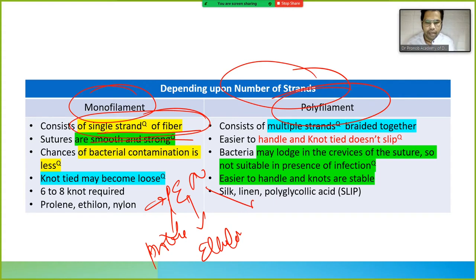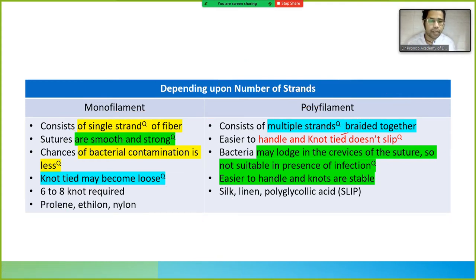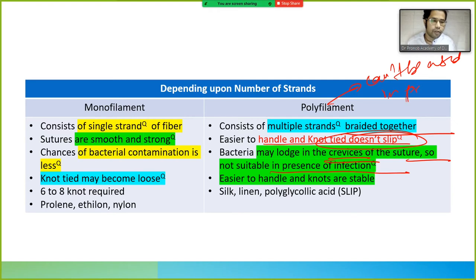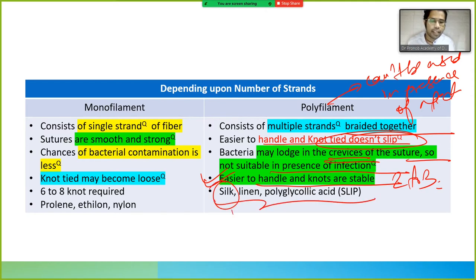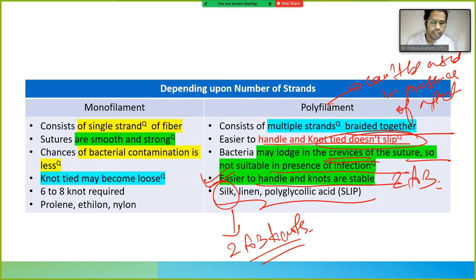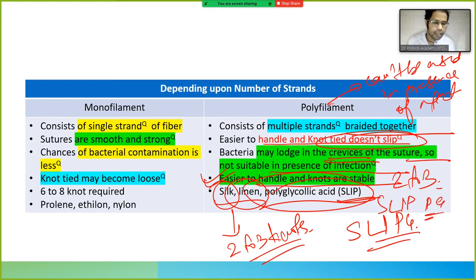Polyfilament consists of multiple strands braided together. It is easier to handle, and knots are tight and do not slip, making it much stronger. However, bacteria may lodge in the crevices, so it is not suitable in the presence of infection. Only two to three knots are needed. Examples are silk, linen, and polyglycolic acid.